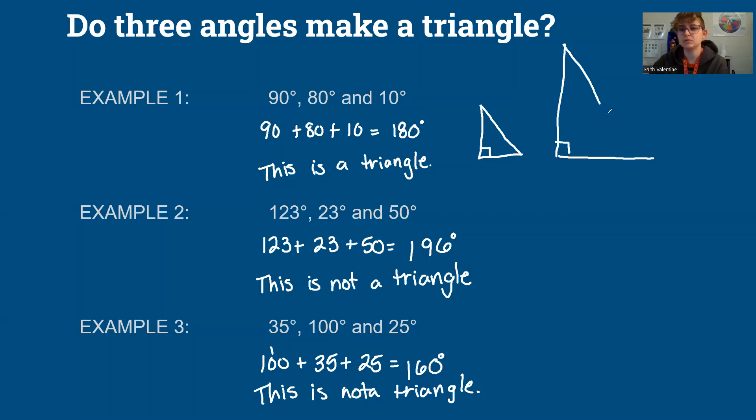But the thing is, I don't know how big this triangle is, because I'm just given two of the angle measures. Okay, it could be small, it could be very large. So we call this making many triangles, because we don't know the dimensions just from the angle measures.